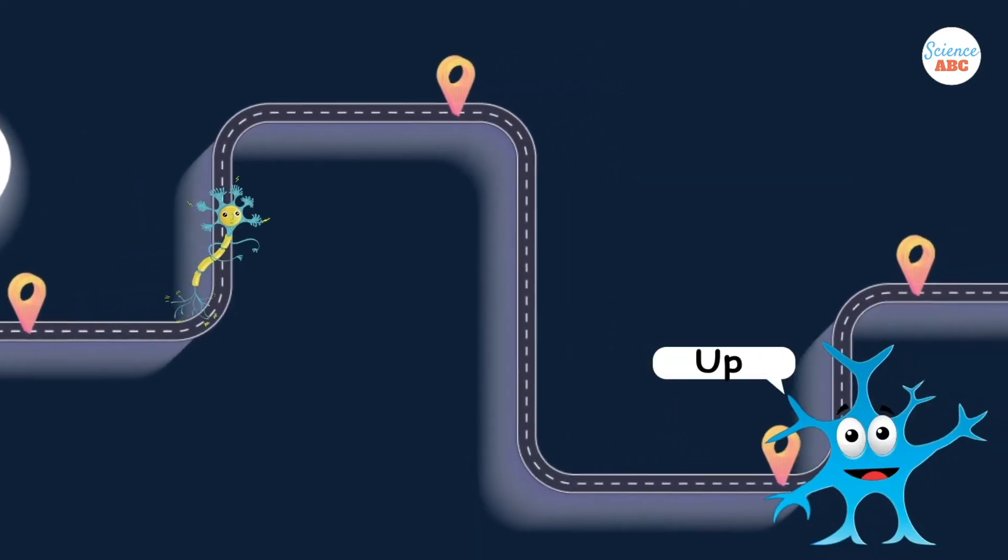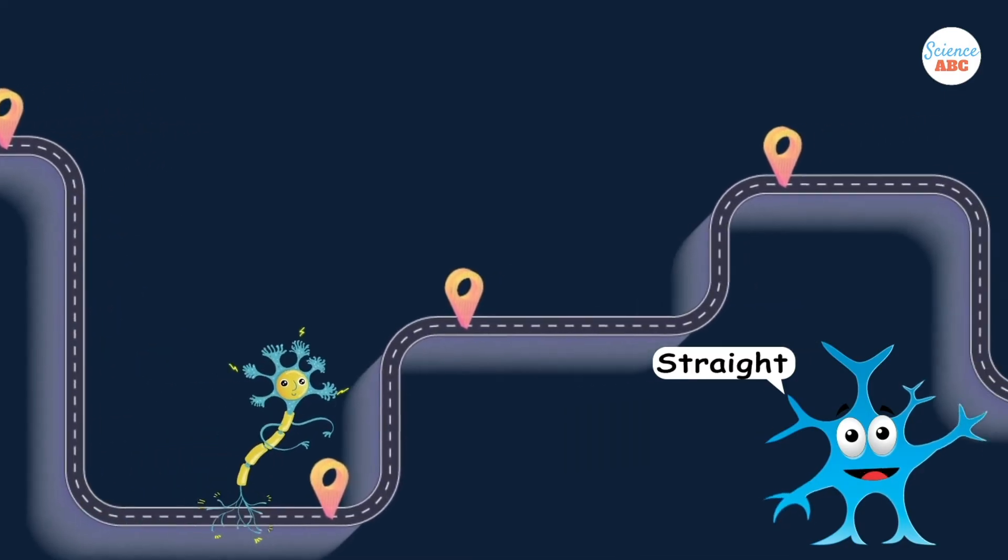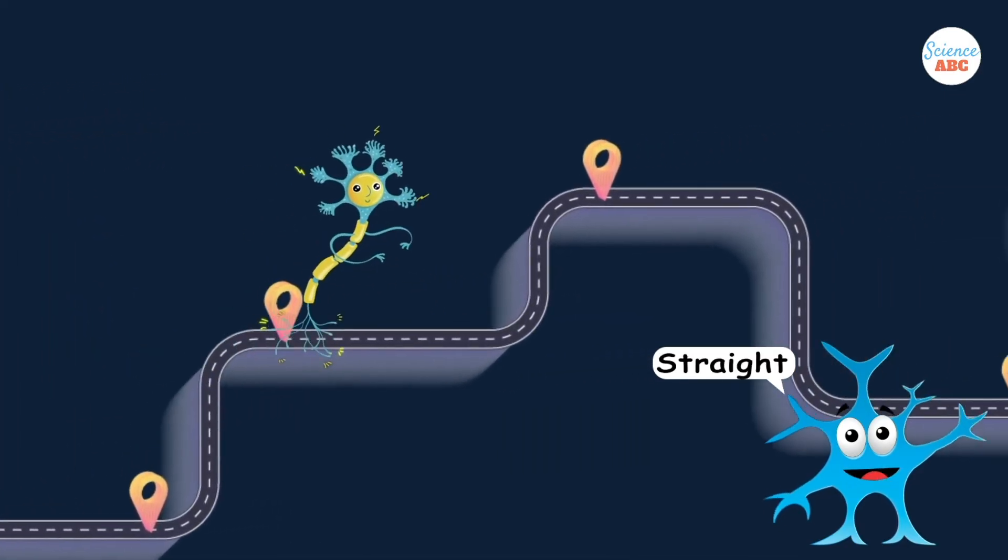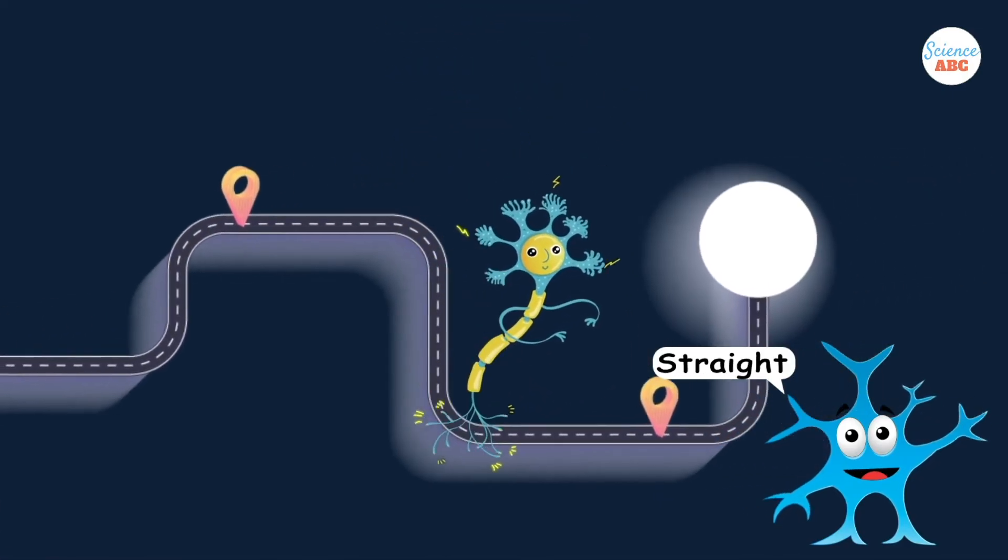Glia don't only play a role in adult brains. Even during brain development, a type of glial cell called radial glia act like road signs that guide neurons to form synapses, the small gaps through which neurons chemically pass information.